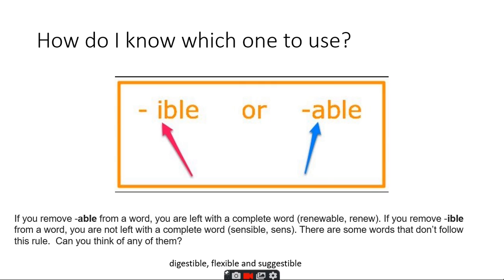You're right. So digestible - you could take off the i-b-l-e and end up with digest. Flexible - take off the suffix, you end up with flex. Suggestible - take off the i-b-l-e and you'll end up with suggest.